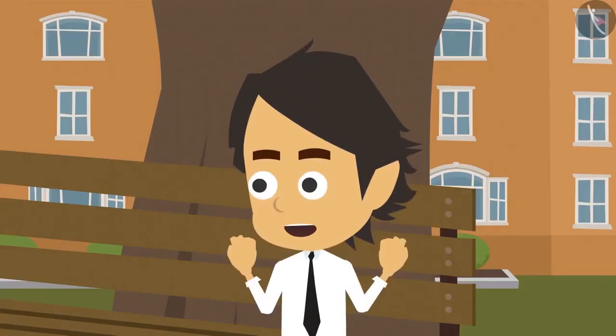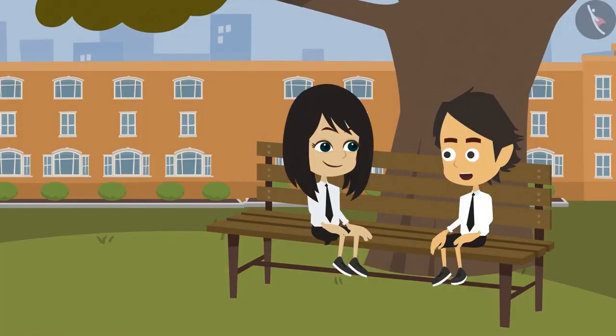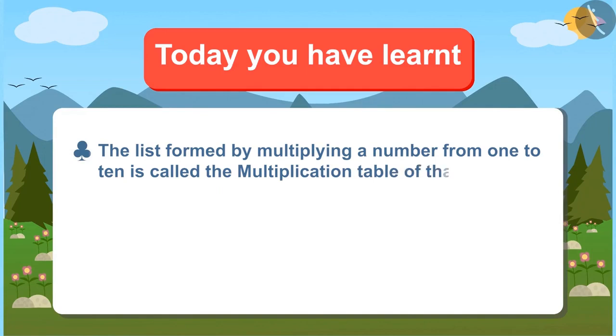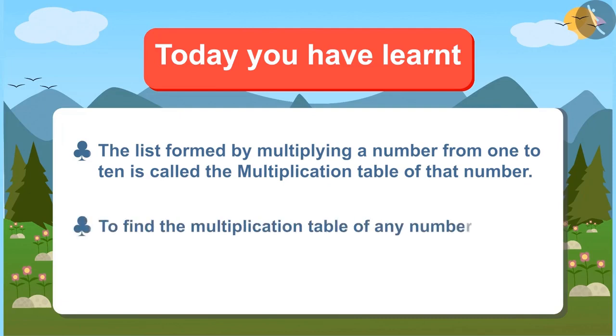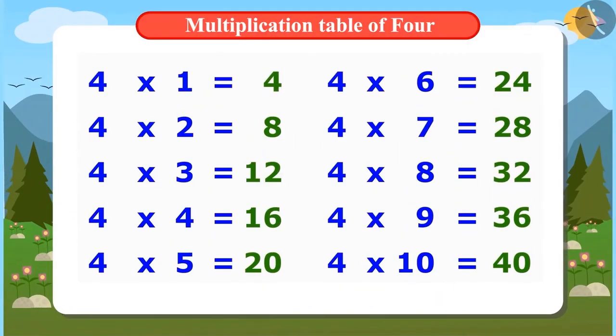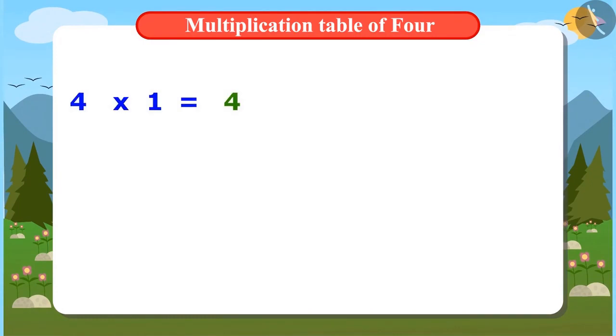This is fun. This way, we can easily remember the multiplication table of 4. Today, you have learned that the list formed by multiplying a number from 1 to 10 is called the multiplication table of that number. And to find the multiplication table of any number, write the number first and keep on adding the same number. For example, to find the multiplication table of 4, write 4 first and add 4 to it. Add 4 again to the result. Keep doing this till you get the whole multiplication table.